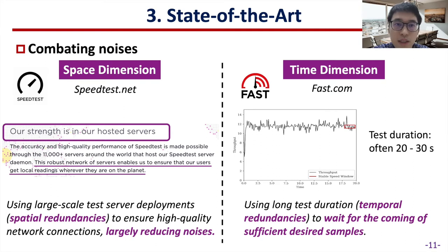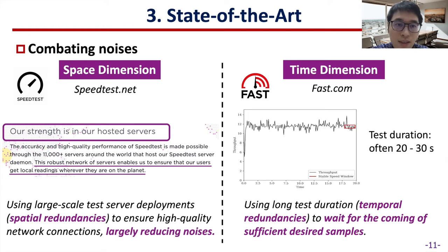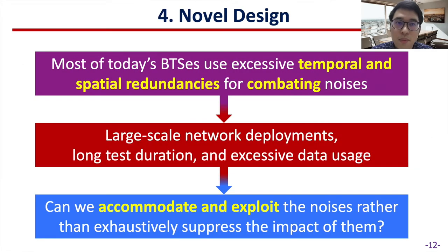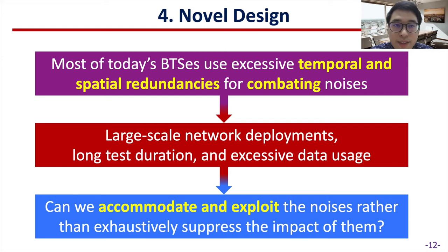For instance, Speedtest deploys over 11,000 test servers around the world. By doing so, it uses large-scale test server deployments to ensure high-quality network connections, thus largely reducing noises. In contrast, Fast combats noises in another way — it uses long test duration to wait for sufficient desired samples. To sum up, most of today's BTSs use excessive temporal or spatial redundancies for combating noises. However, these solutions can lead to large-scale network deployments, long test duration, and excessive data usage.